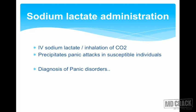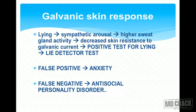Galvanic skin response is an interesting test sometimes used to detect lying. When there is lying, there is sympathetic arousal and overactivity, leading to higher sweat gland activity. When sweat gland activity is high, there is decreased skin resistance to galvanic current. So you pass galvanic current through the skin, and if there is decreased skin resistance, it becomes a positive test for lying — the lie detector test. However, this test will be false positive in patients with anxiety, who already have sympathetic arousal.